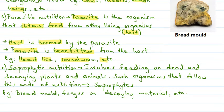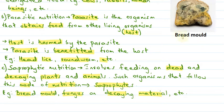In saprophytic nutrition, the organism feeds on dead and decaying plants and animals. Such organisms which follow this mode of nutrition are called saprophytes. For example, bread mold fungus that can be found on decaying material — here we have taken an example of bread mold found on decaying bread. They secrete several enzymes by which they can feed on dead and decaying plants and animals.